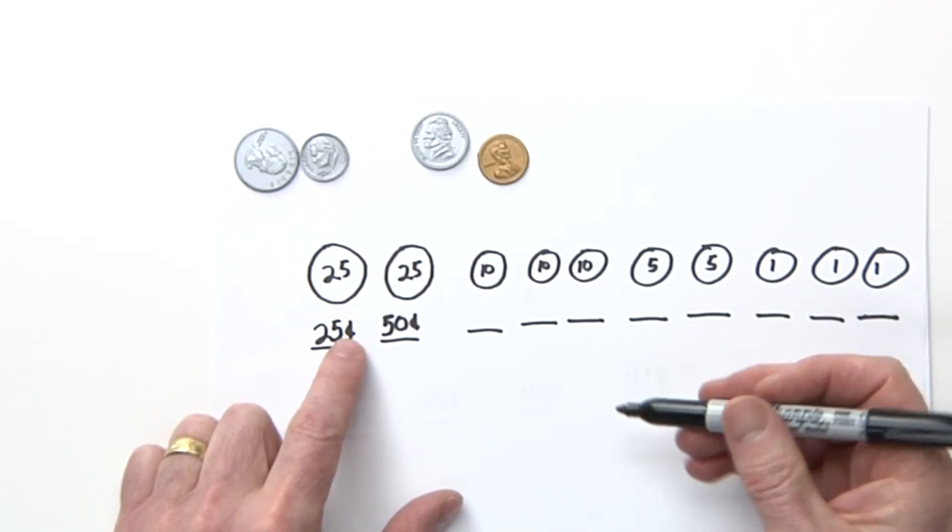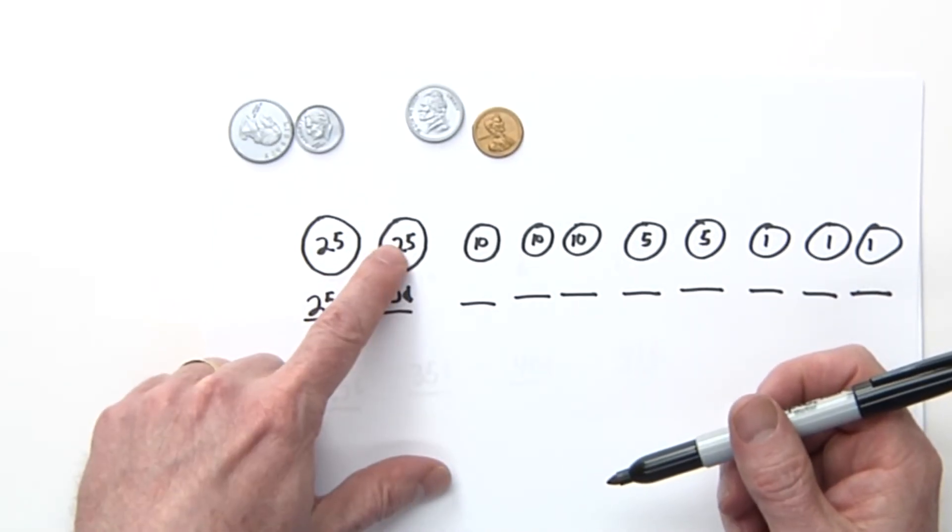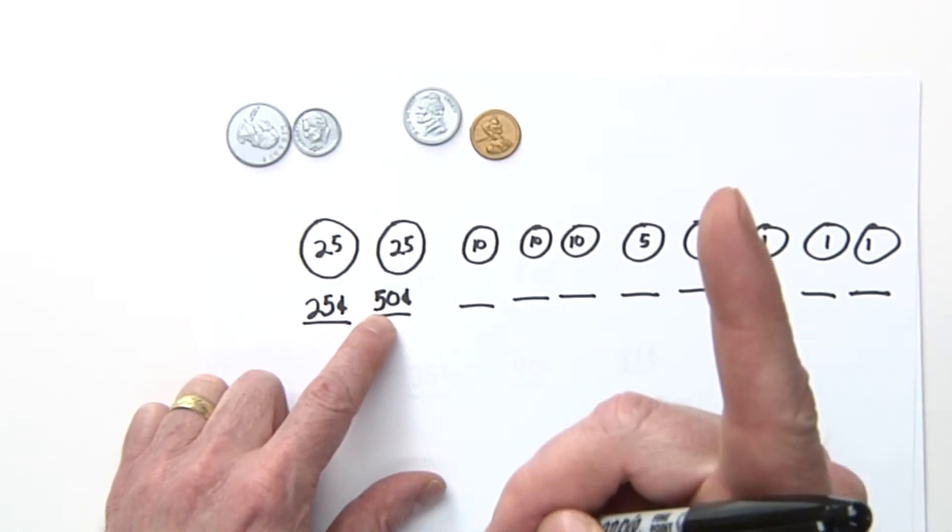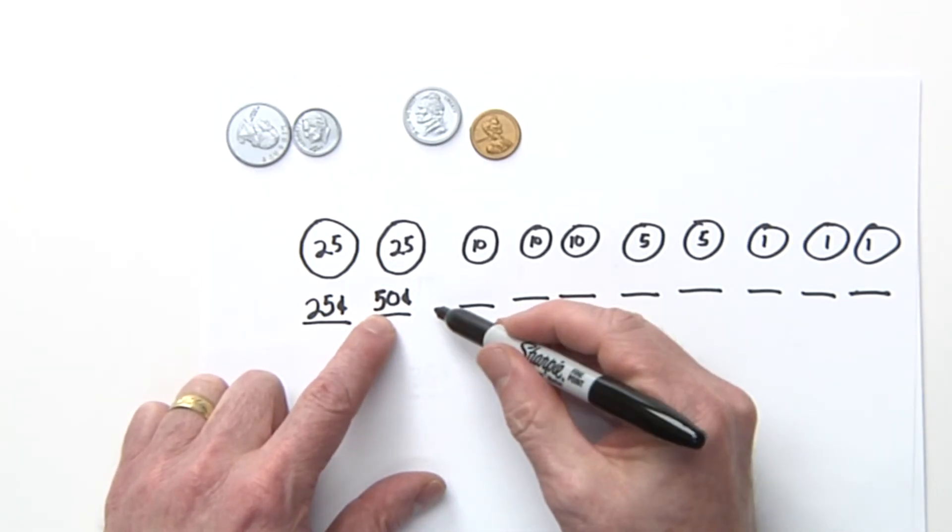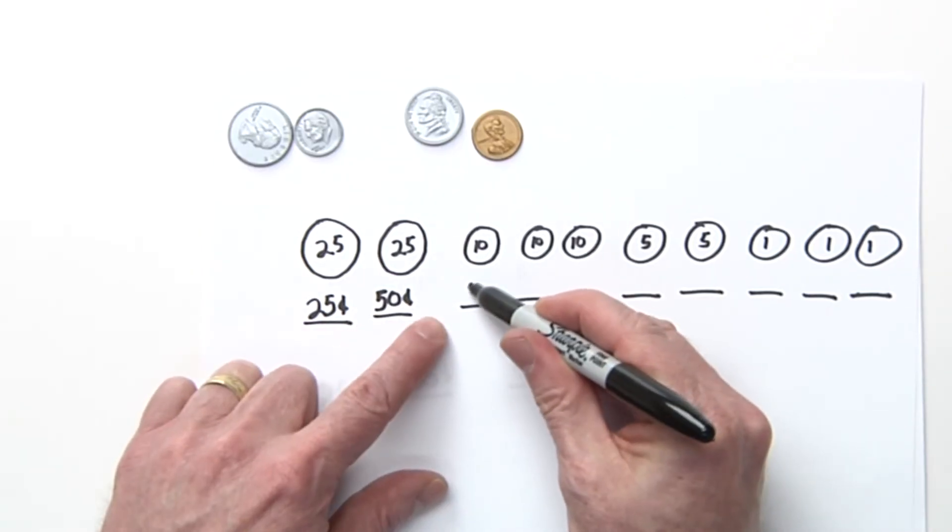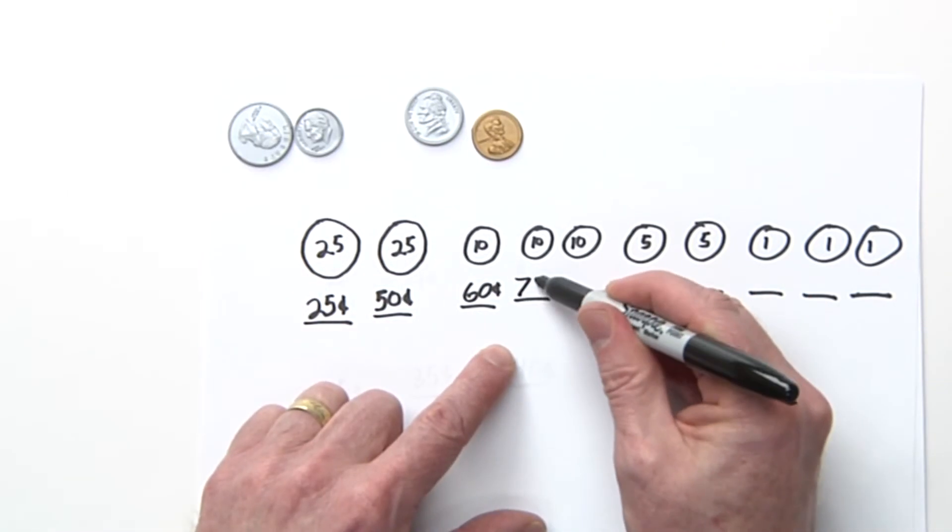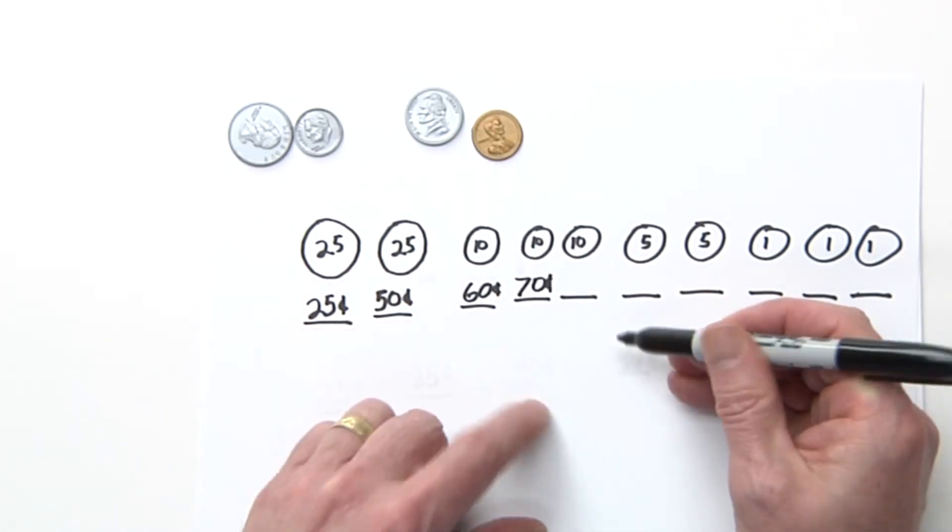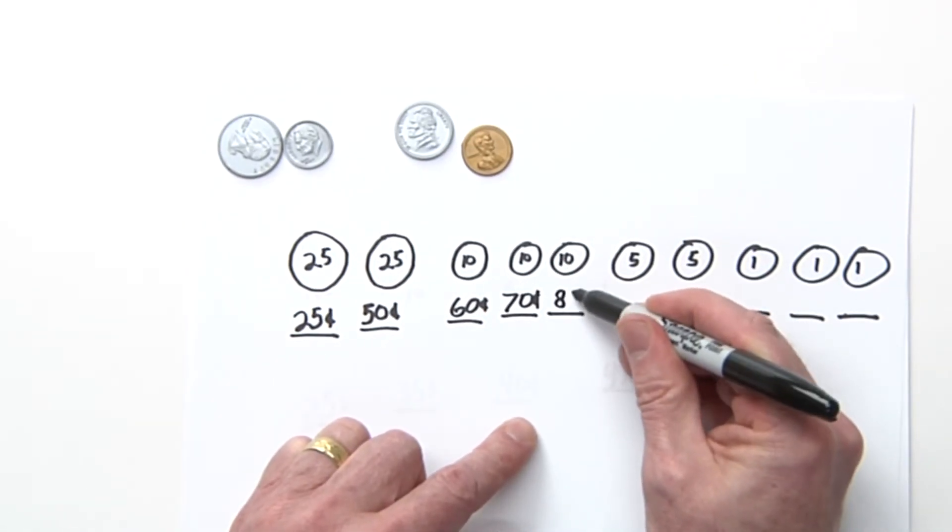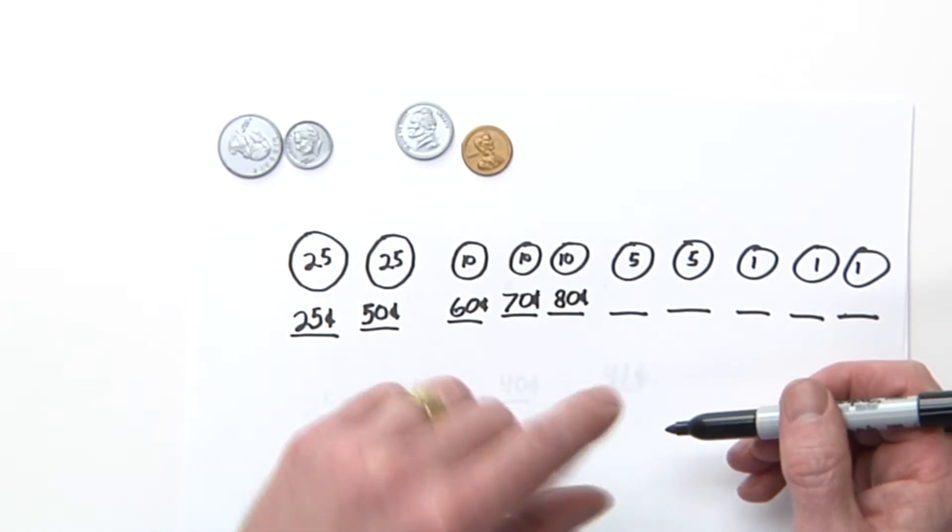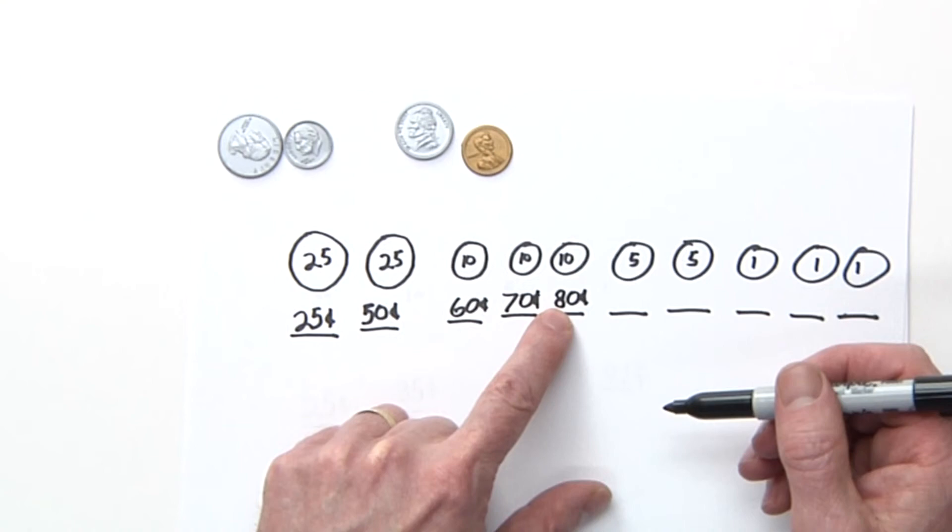Let's move on. 25 plus another quarter is 50 cents. 50 plus 10—get to know your tens, how to count by your tens—50, 60 plus another one, 70 plus another one, 80. So you got 80 cents right now. Now we're going to go by fives. Don't get mixed up with the dimes anymore; now we're going by fives.